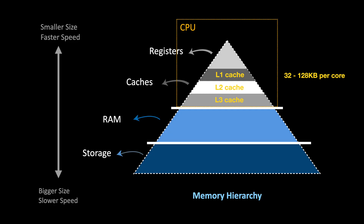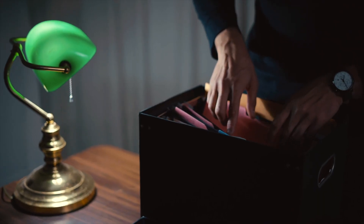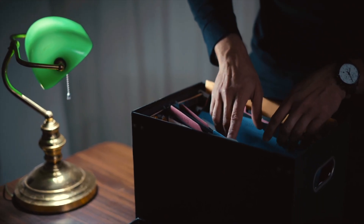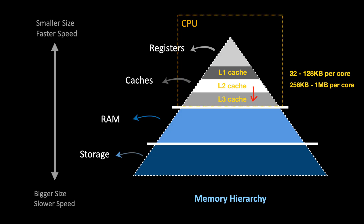If the data isn't in layer one, the CPU moves to layer two. Layer two is larger than layer one but also slower. Typical sizes range from 256 kilobytes to one megabyte per CPU core. It acts as a middle ground between layer one and RAM, storing frequently accessed data that couldn't fit in layer one. When the CPU finds data in layer two, it can fetch it within around 10 nanoseconds — still fast, but not as fast as layer one.